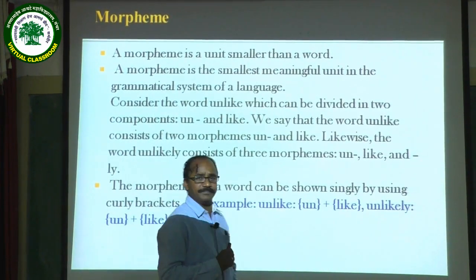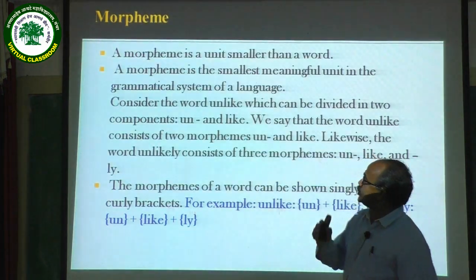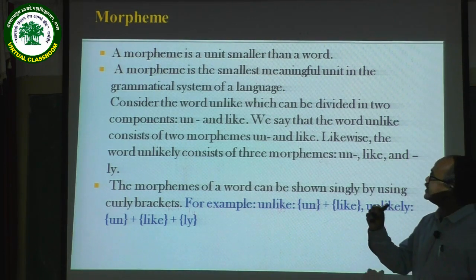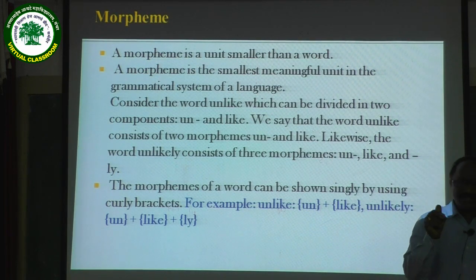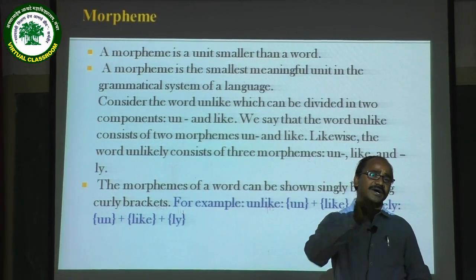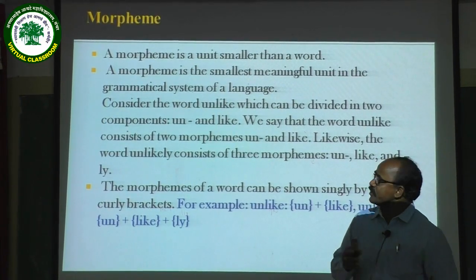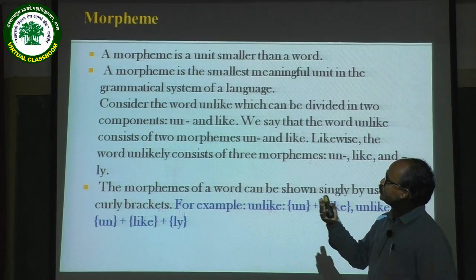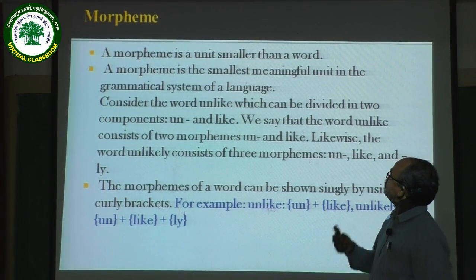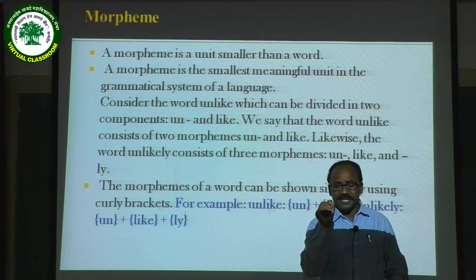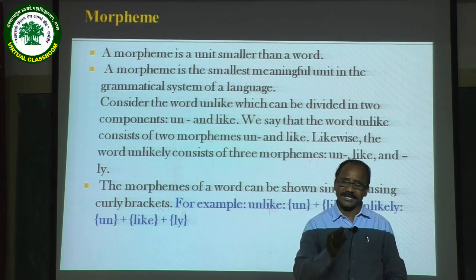The first thing which comes in our mind when we talk about morphology is the basic unit: a morpheme. So we need to talk about what a morpheme is. A morpheme is the smallest unit in a word — it is actually a minimum meaningful component or unit in a word. In linguistic terms, a morpheme is the smallest meaningful unit in the grammatical system of a language.